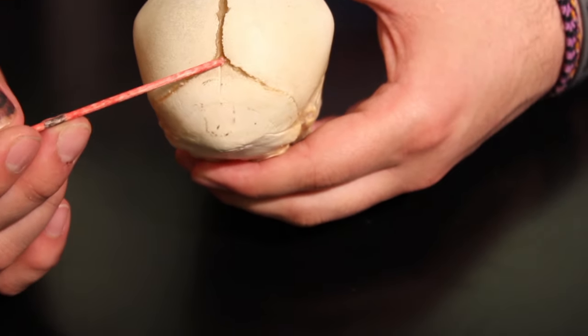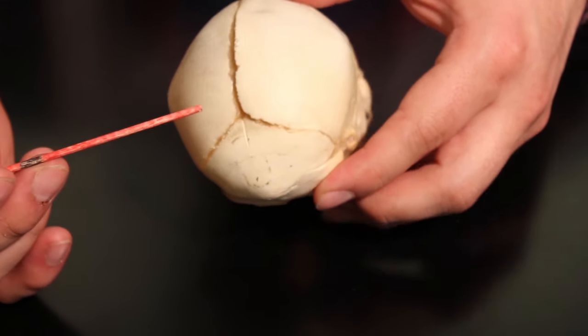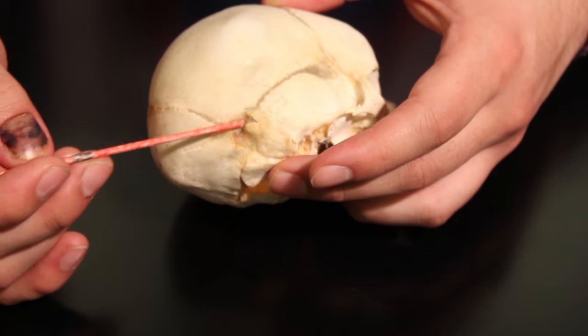Here's the posterior part of the skull, so this is going to be called the posterior fontanelle. Okay, so that's the posterior fontanelle right there. Then if we flip it over here to the lateral side.